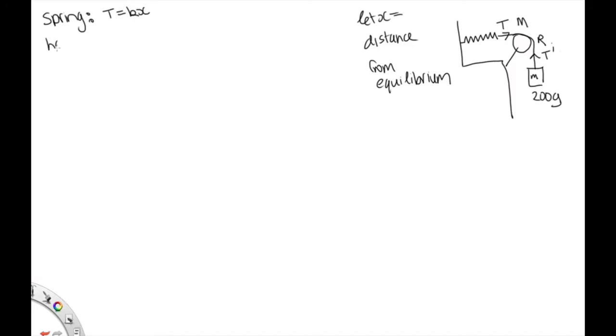Now for the hanging mass, we've got ma, the total force, which is m d squared x dt squared, is equal to, it's got gravity pulling it down, so the weight force mg. And then it's got this tension force pulling it upwards.